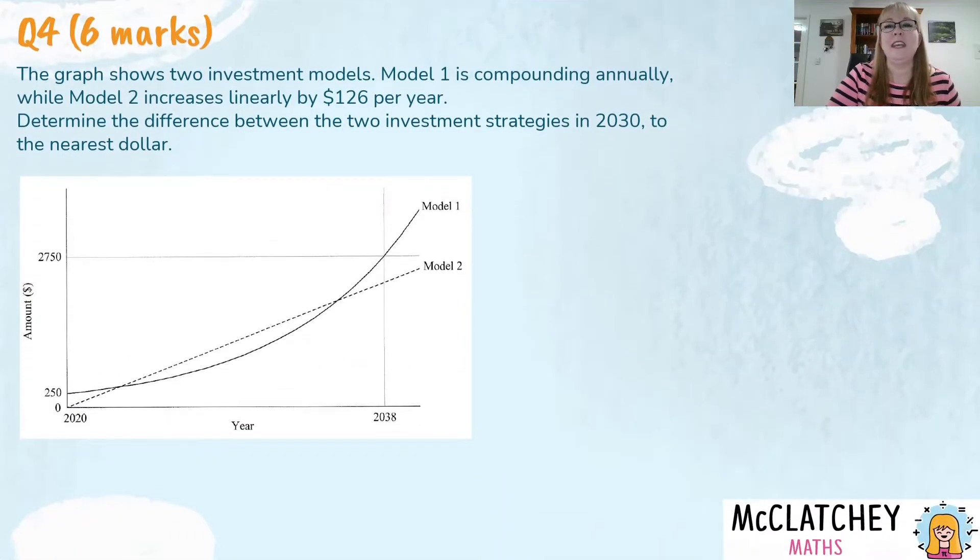Let's get straight into the question. It's worth six marks so it's one of the big ticket questions on the whole paper. The graph shows two investment models. Model one is compounding annually and we can see that on the graph. It's the one that has the curve and model two increases linearly by $126 per year. Linearly is that straight line model of model two. Determine the difference between the two investment strategies in 2030 to the nearest dollar.